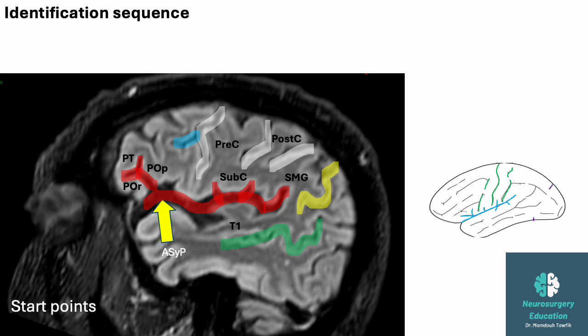Now moving to identification sequence — you can identify one point and then follow it to localize your lesion. For example, the widest point of the sylvian fissure is called the anterior sylvian point. It's the location where you open the fissure during surgery and it's located just below the pars triangularis. You can also identify the pars triangularis directly sometimes, or identify the intersection of the inferior frontal sulcus and the pre-central sulcus. Another method is to start from below the sylvian fissure by identifying the superior temporal gyrus and then going up.